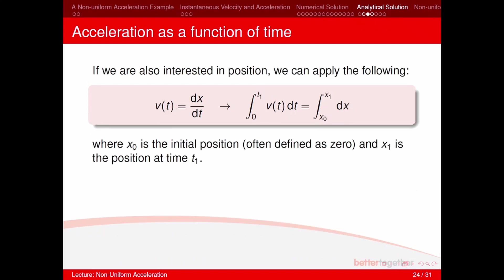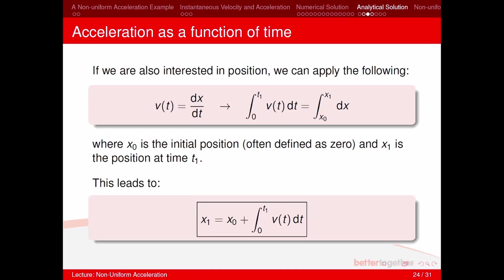If we're also interested in position, we use v(t) = dx/dt, rearrange with integrals on both sides, and obtain: x_1 = x_0 + ∫v dt, where x_0 is the initial position (often set to zero).